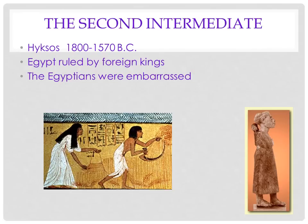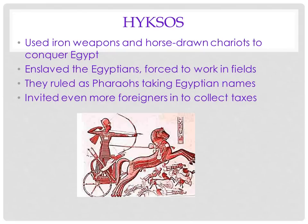Then came the Second Intermediate period, when Egypt was actually run by foreigners — which was really embarrassing to the Egyptians. These were called the Hyksos, and they used iron weapons and horse-drawn chariots to conquer Egypt. They enslaved the Egyptians, ruled as pharaohs taking Egyptian names, and invited even more foreigners in to collect taxes.